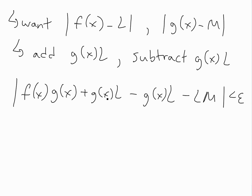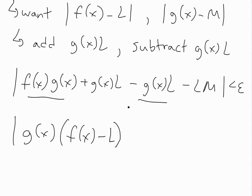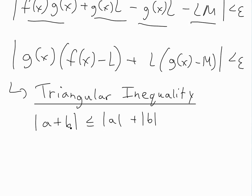Now we rearrange by comparing terms and factoring. We take g(x) out to get g(x) times (f(x) minus L), and then factor L out of the remaining terms to get L times (g(x) minus M). This is less than epsilon. We can simplify further by applying the triangle inequality, which states the absolute value of (a plus b) is less than or equal to the absolute value of a plus the absolute value of b.